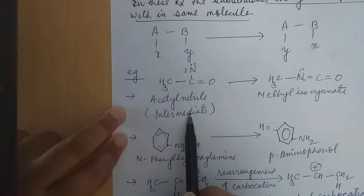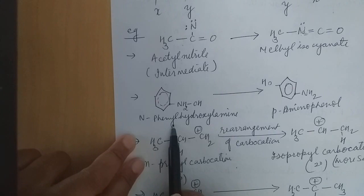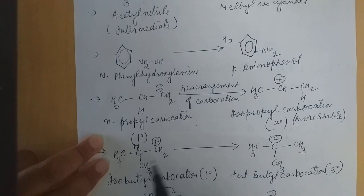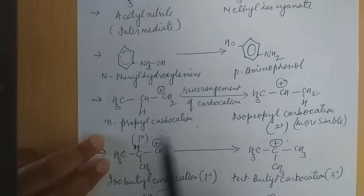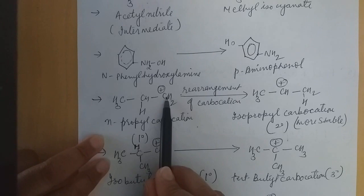If we have N-phenyl hydroxylamine and the substituents rearrange, then it becomes para-aminophenol. If we have N-propyl carbocation — carbocations also undergo rearrangement reaction, which we already discussed in the previous lecture. For stability, the carbocation rearranges — primary to secondary, primary to tertiary — stability changes. N-propyl carbocation: positive charge moves to the central carbon atom and hydrogen moves to the terminal carbon. After rearranging, primary carbocation is converted into secondary carbocation.